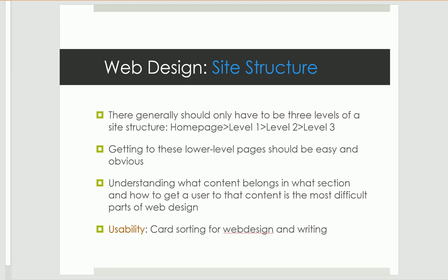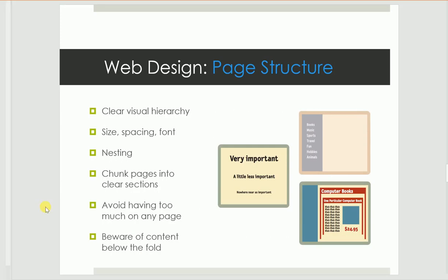The next step down from larger website architecture is individual page design. Good web pages have a clear visual hierarchy — and there's a reason we learned about visual hierarchy earlier in this course. Keep in mind the design techniques covered before, such as visual hierarchy, scannability, and easy-to-read font sizes and styles. Those are all details to keep in mind for this unit as well.